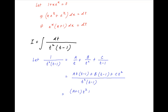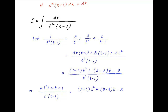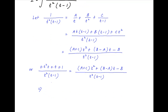This can be rewritten as a plus c times t square plus b minus a times t minus b, divided by t square times t minus 1. The left-hand side can be written as 0 times t square plus 0 times t plus 1, divided by t square times t minus 1. This is equal to the right-hand side: a plus c times t square plus b minus a times t minus b, divided by t square times t minus 1. The denominator is the same on both sides.